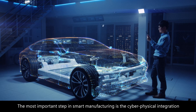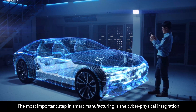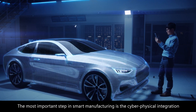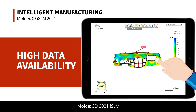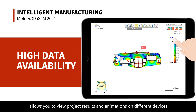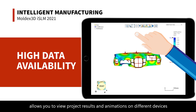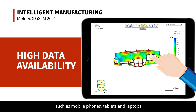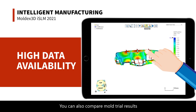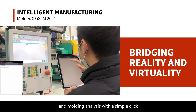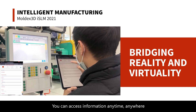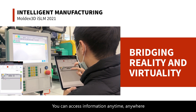The most important step in smart manufacturing is the cyber-physical integration. Moldex 3D 2021 iSLM allows you to view project results and animations on different devices, such as mobile phones, tablets, and laptops. You can also compare mold trial results and molding analysis with a simple click, and access information anytime, anywhere.